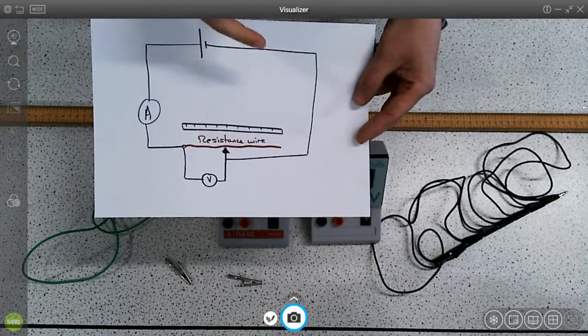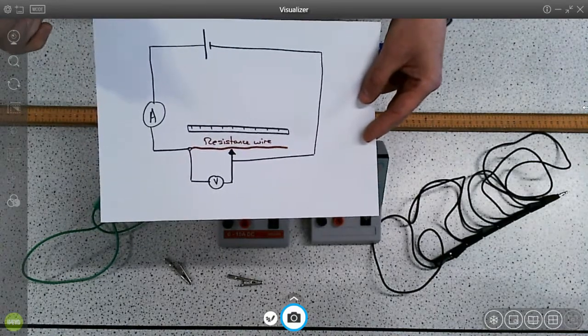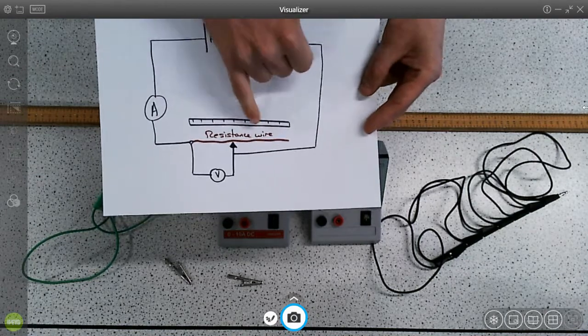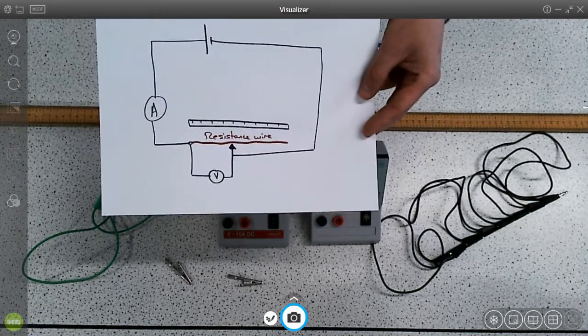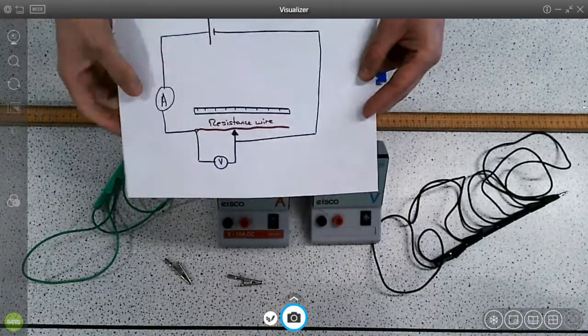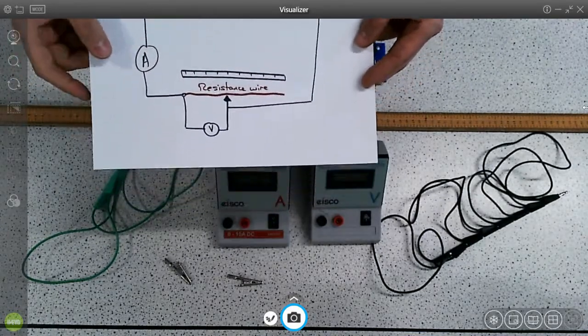So this is the circuit diagram. Now you'll also notice that it says resistance wire. This term is useful to highlight because this wire that we use is specially chosen because it has a relatively high resistance.